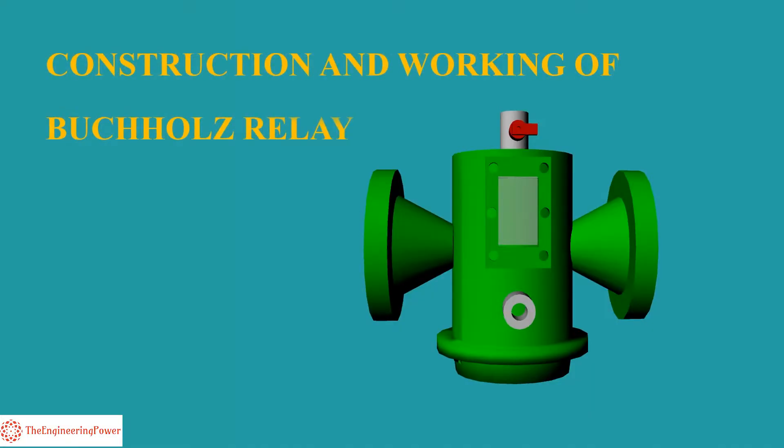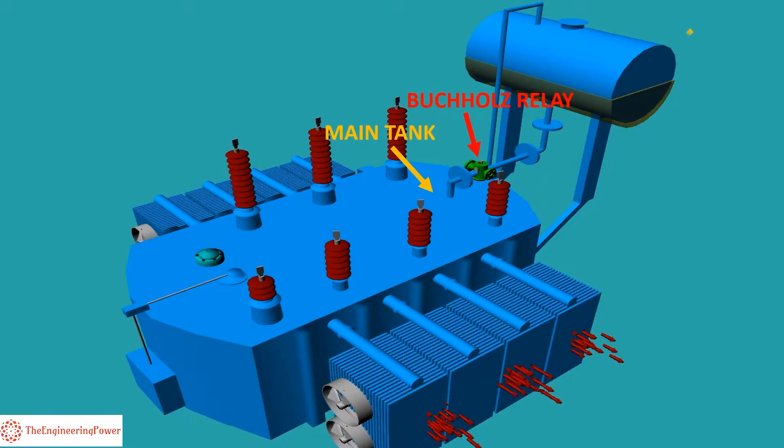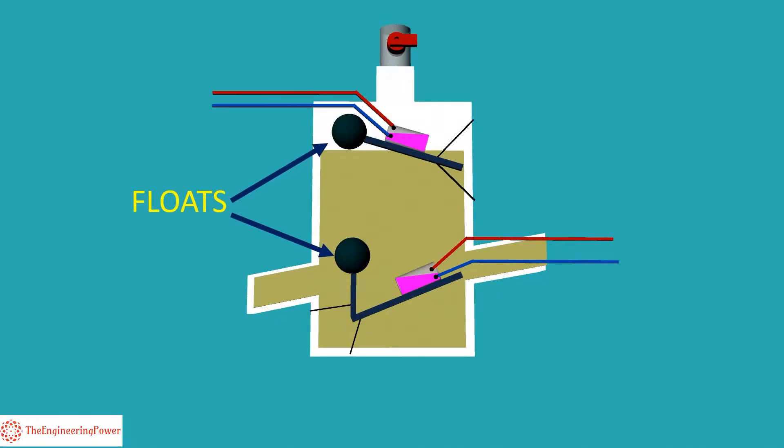Now we explain the construction and working of Buchholz relay. Buchholz relay is installed on the pipe connecting the main tank and conservator tank of the transformer. It has two floats with hinges attached. The upper float is related to the alarm function, whereas the lower float is related to the trip function of the Buchholz relay.